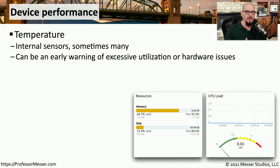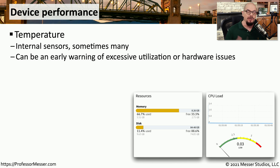On your network, you've probably installed routers, switches, and firewalls, and other infrastructure devices. But how do you know if those devices are performing well? There are a number of performance metrics that can give you information about the health and availability of these devices.